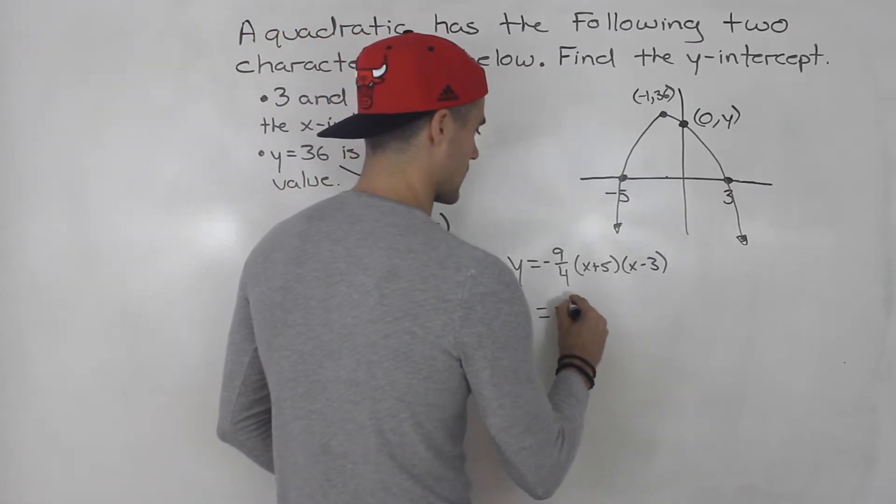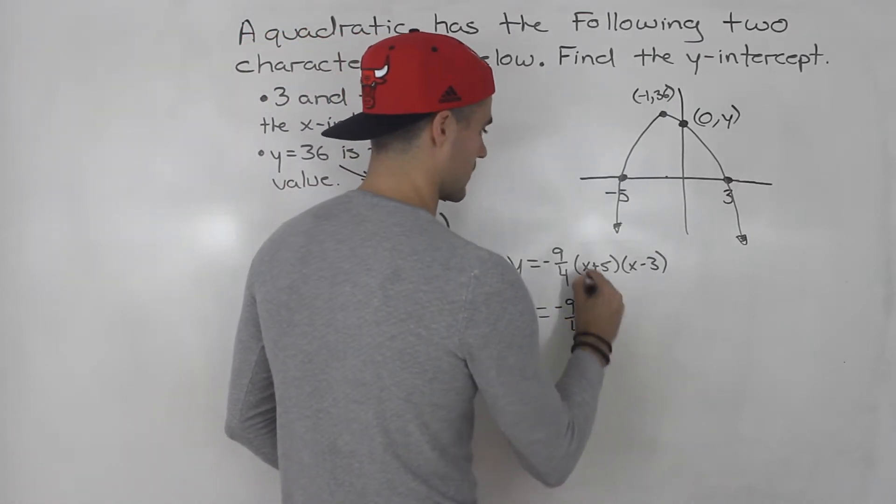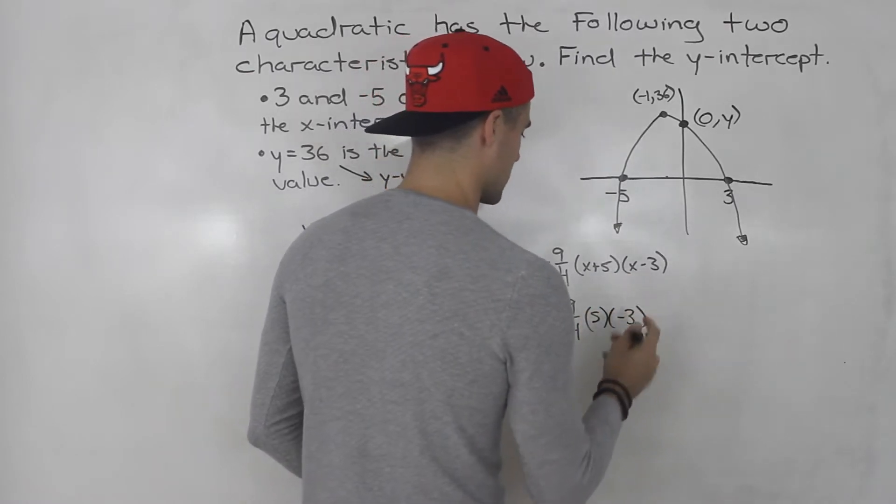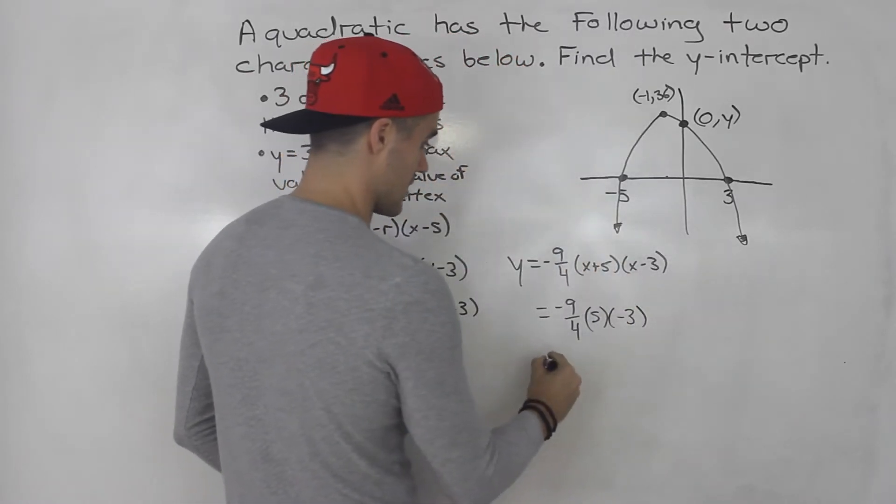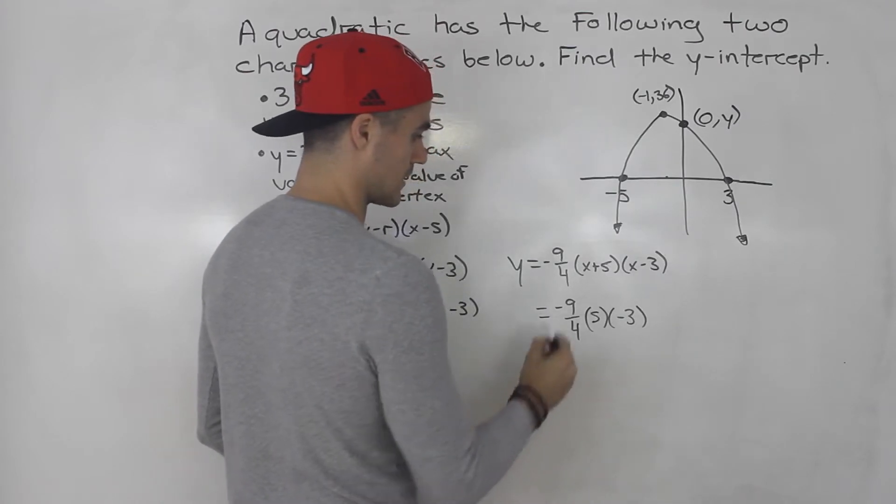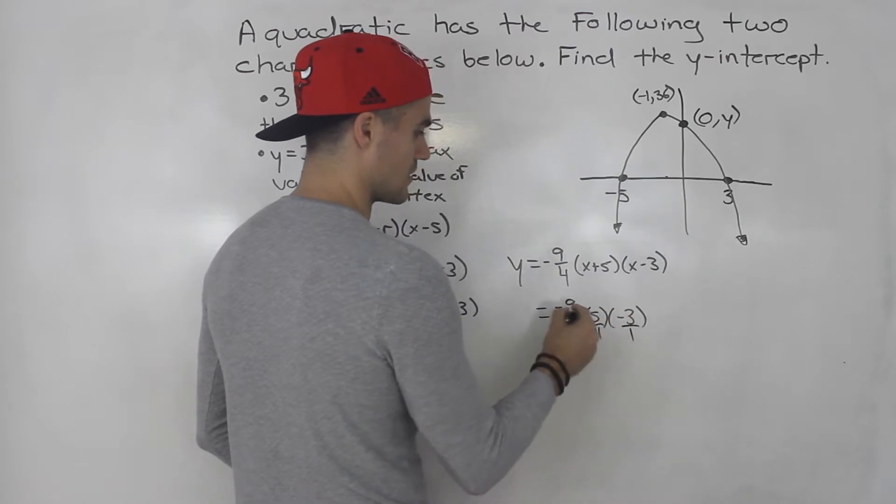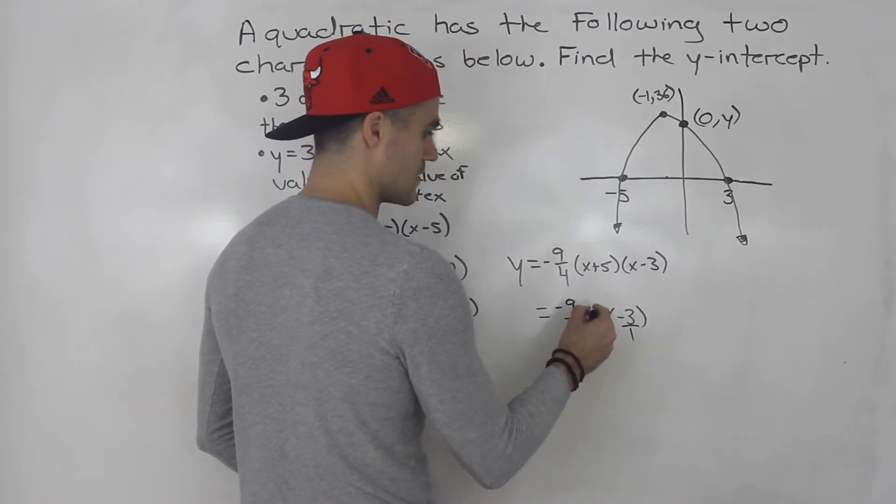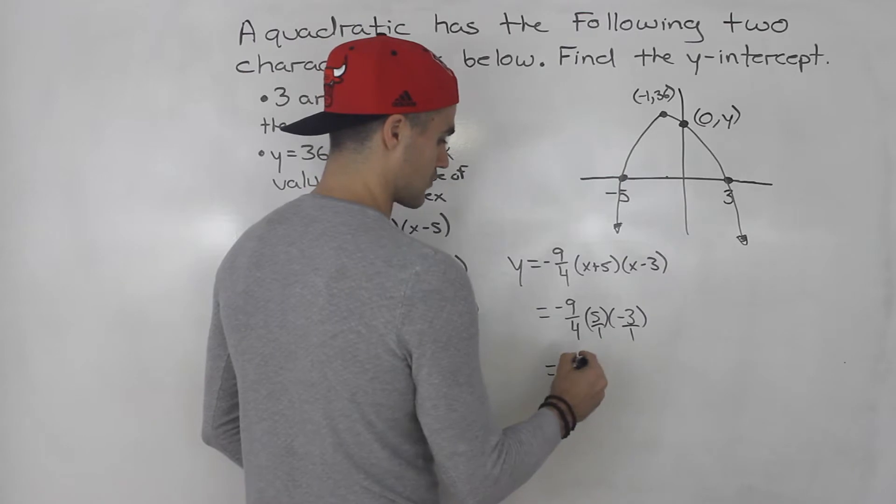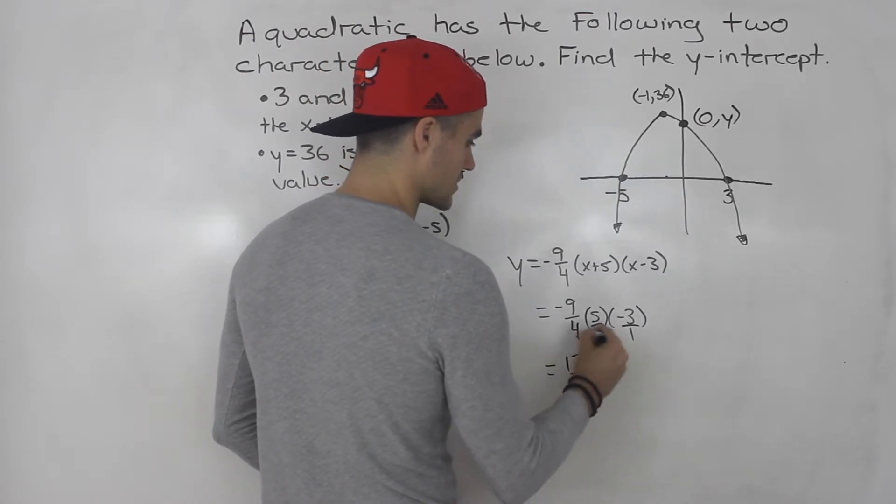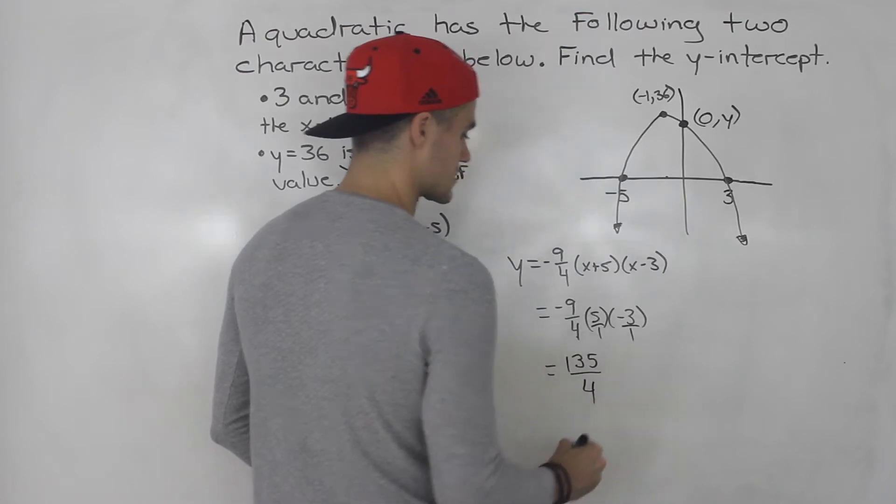So, if we plug in 0 for x, 0 plus 5 is just 5, 0 minus 3 is negative 3, and then we'll have what? This is like 5 over 1. It's like negative 3 over 1. So, negative 9 times 5 times negative 3, that would be negative 45 times negative 3 would give us positive 135, and 4 times 1 times 1 gives us 4.